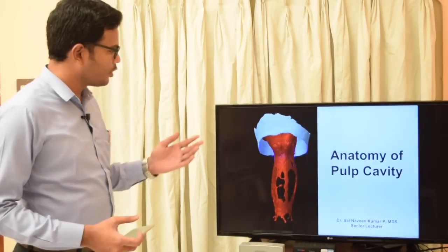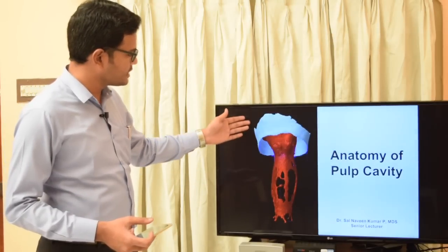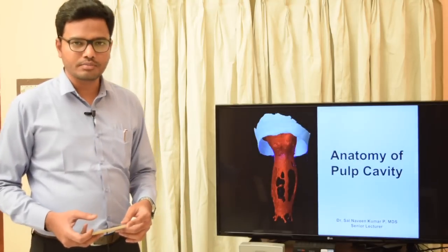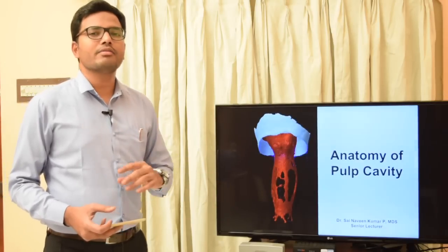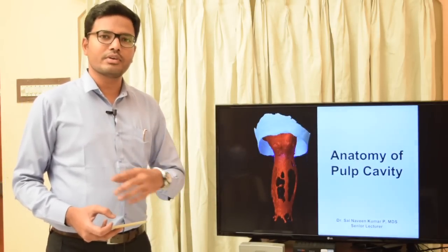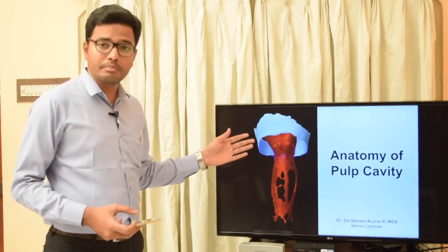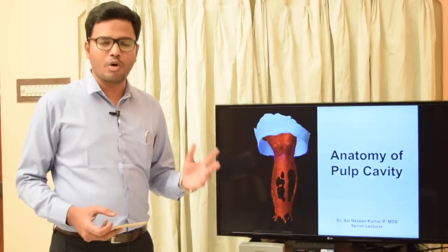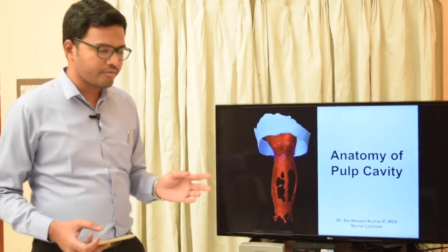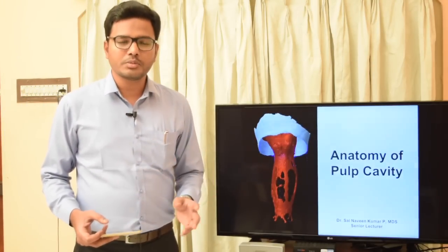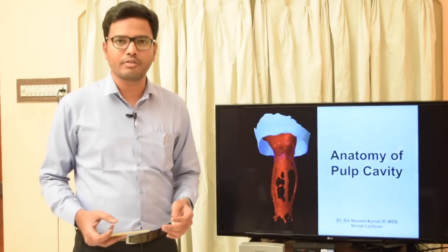Now let's move on to today's topic: anatomy of pulp cavity. As you can see here, it's a three-dimensional CT image of the pulp cavity of a molar, showing how complex the anatomy is. Studies have proved that even after completion of root canal treatment, around 30 to 35 percent of canal surfaces are left untouched. Today we'll understand key terms, basic anatomy of pulp cavity, various canal configurations, and the significance of apical foramen.